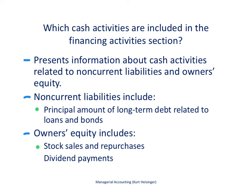The last section of the statement of cash flows is called the financing activities section. In more complicated statements there is additional information presented at the very bottom, but for a basic statement the third section is the financing activities section. This presents information related to non-current liabilities and owner's equity. Cash flow related to current liabilities, like accounts payable, typically flows into the operating activity section because it relates to the day-to-day operations of the business.